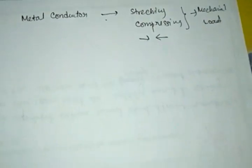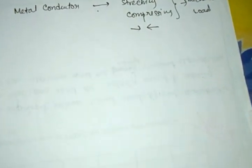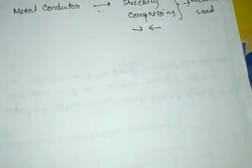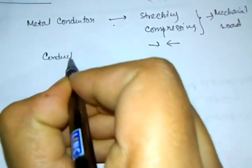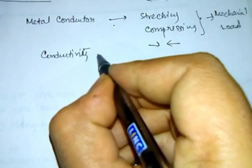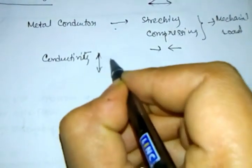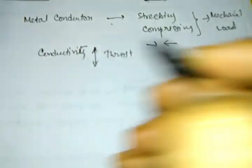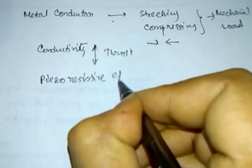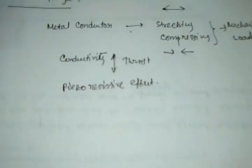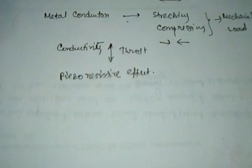How can it work? The first thing you need to know is that there is a change in the value of resistivity of the conductor when it is strained — this has a property called the piezoresistive effect. So if you give some kind of thrust it will change the conductivity, and that effect is called the piezoresistive effect. It is also called a piezoresistive gauge.